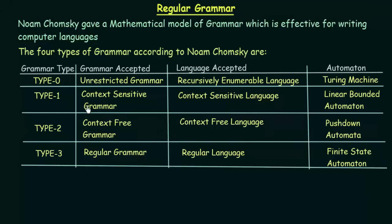For Type 1 Grammar, the grammar accepted is Context Sensitive Grammar, the language accepted is Context Sensitive Language, and the automaton used is the Linear Bounded Automaton. These are the types of grammar according to Noam Chomsky's classification. We will be starting with regular grammar, which will be discussed in this lecture.